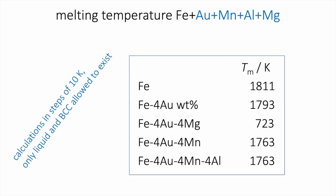Here are the results of the calculations assuming that only liquid and body-centered cubic crystal structure is allowed to exist. You can see that we can get very large variations in the melting temperature — for example in the case of the iron-gold-magnesium alloy. We have obtained these results without doing any experiments, and we can be confident they will be fairly accurate because of the international procedures used to assess the thermodynamic data before putting them into data banks.